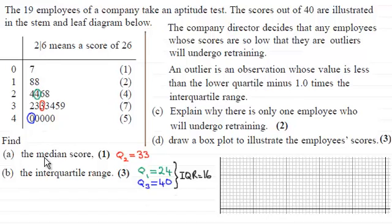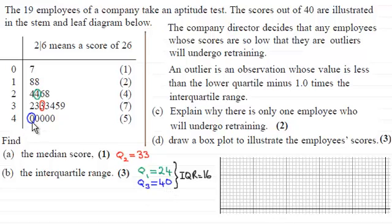We had to work out the median score — Q2 — which was 33, and then the interquartile range. We had the lower quartile Q1, which was 24, and the upper quartile Q3, which was 40. By doing the upper quartile minus the lower quartile, we got the interquartile range, which was 16.